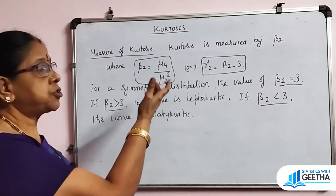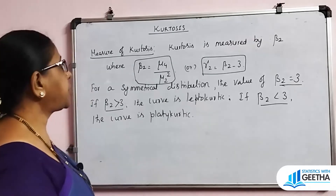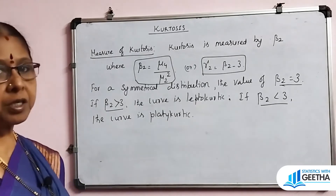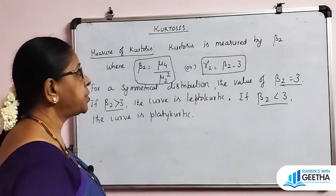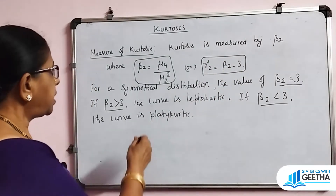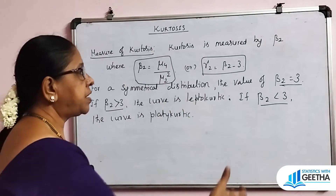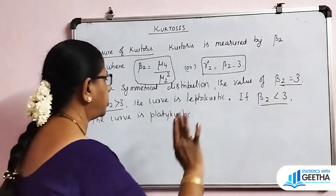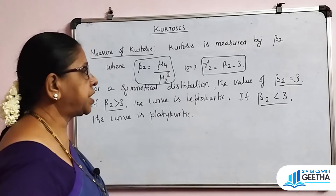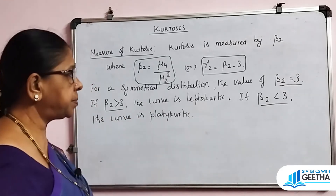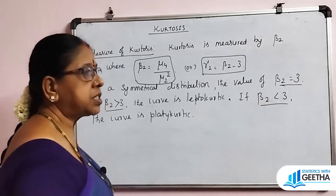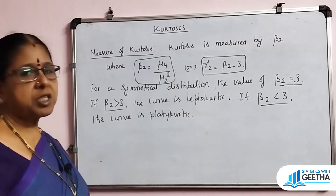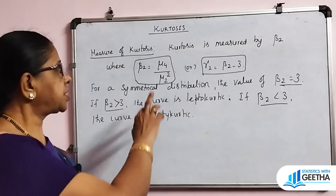The measure of kurtosis is beta2 = mu4 / mu2². Also, gamma2 = beta2 − 3. In a normal distribution, beta2 is always equal to 3. If beta2 > 3, the curve is leptokurtic. If beta2 < 3, the curve is platykurtic. So skewness is measured by beta1 and kurtosis is measured by beta2.